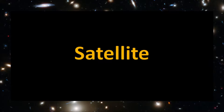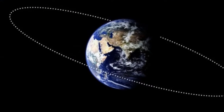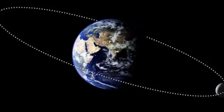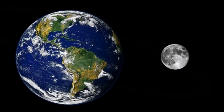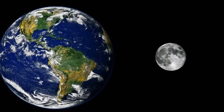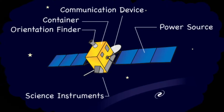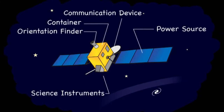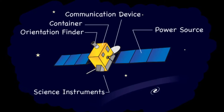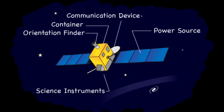First, let's talk about satellites. Satellites are objects that orbit around planets. Some are natural, like the moon, and some are man-made. These man-made satellites are usually made for communication.